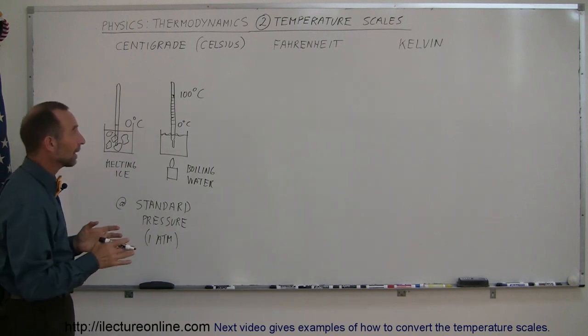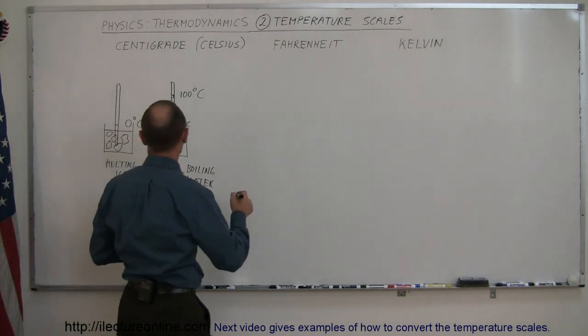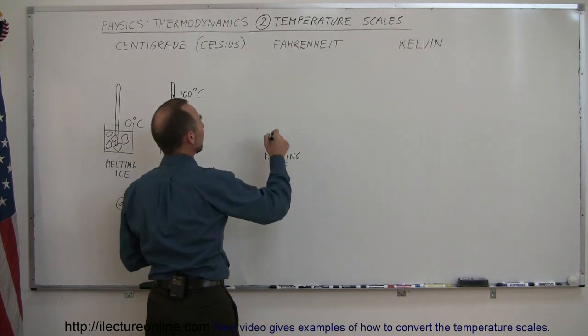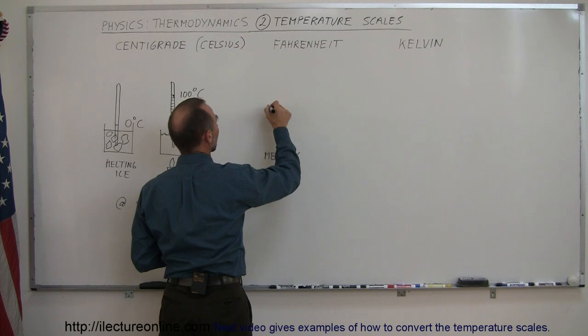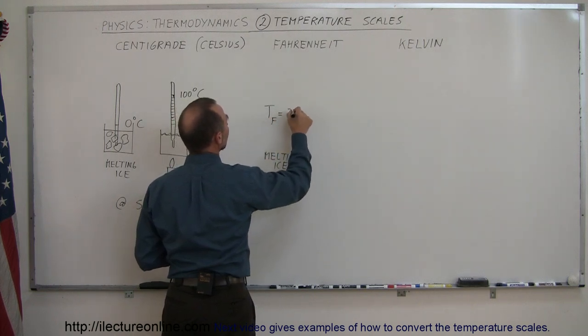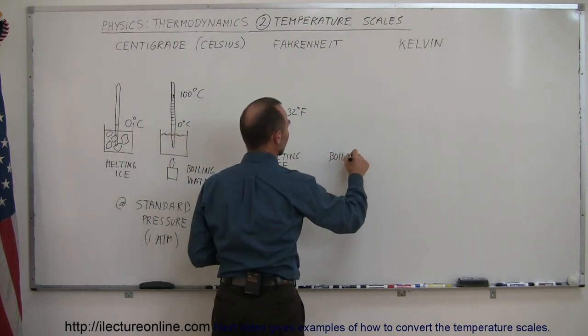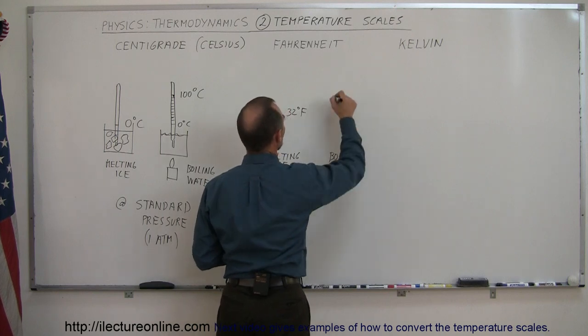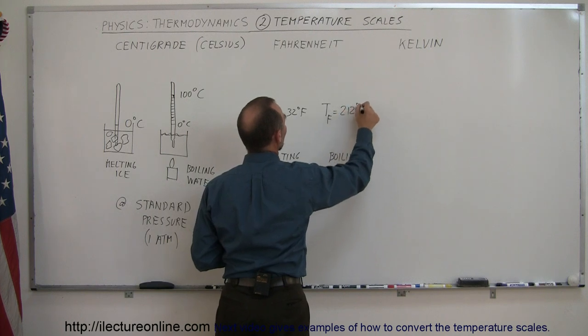Now if we do that with a thermometer that has Fahrenheit degrees on it, you'll get a different result. For the case of melting ice, or freezing water, the temperature in Fahrenheit degrees will be equal to 32 degrees Fahrenheit. And if we put it in boiling water, under the same circumstances, the temperature will now read in Fahrenheit degrees will be 212 degrees Fahrenheit.